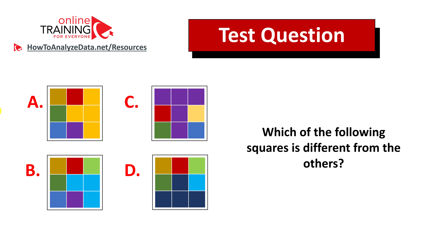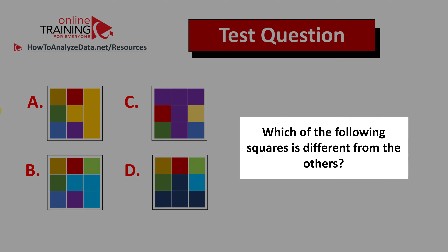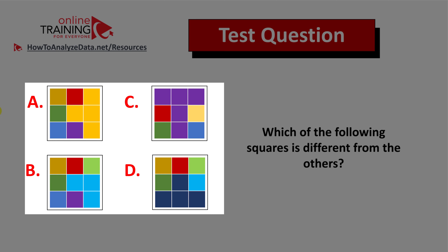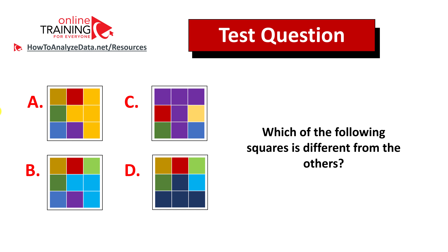Here's a tricky question — which of the following squares is different from the others? You're presented with four different 3x3 squares: choices A, B, C, and D. My tip here is always look for patterns. If you have figured out the answer, make sure to post it in the comment section of this video. Thanks for participating and good luck solving this challenge.